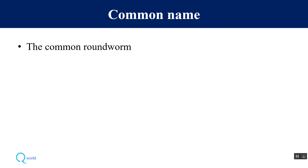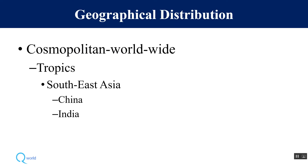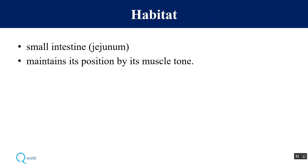The common name is common roundworm. Geographical distribution: it is seen worldwide, especially in the tropics, and is a problem mainly in Southeast Asia, particularly countries like China and India. Habitat: they are seen in the small intestine, especially the jejunum, and they maintain their position by muscle tone.